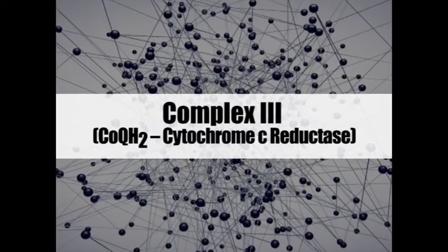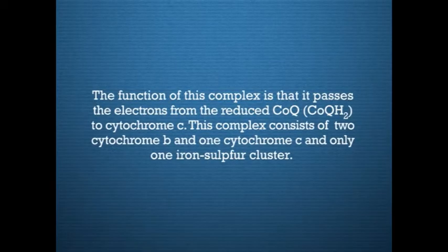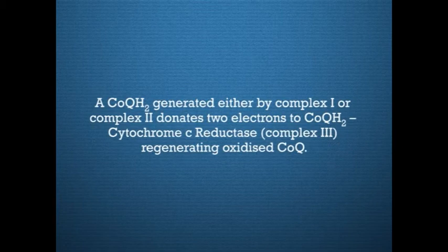Now we shall come to complex 3, also known as dihydroubiquinone cytochrome C reductase. The function of this complex is to pass electrons from reduced coenzyme Q, or dihydroubiquinone, to cytochrome C. This complex consists of 2 cytochrome B, 1 cytochrome C1, and only 1 iron-sulphur cluster. Reduced coenzyme Q, generated either by complex 1 or complex 2, donates 2 electrons to complex 3, regenerating oxidised coenzyme Q. At the same time, it releases into the intermembrane space two protons previously picked up by coenzyme Q on the matrix phase, generating part of the proton motive force.